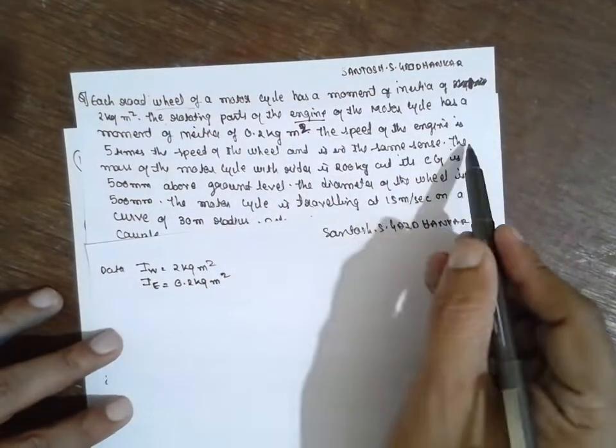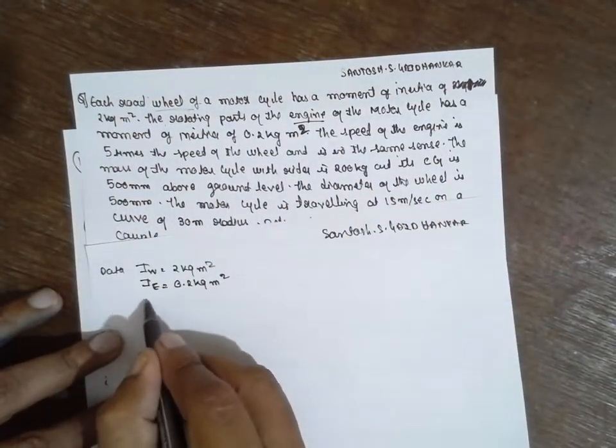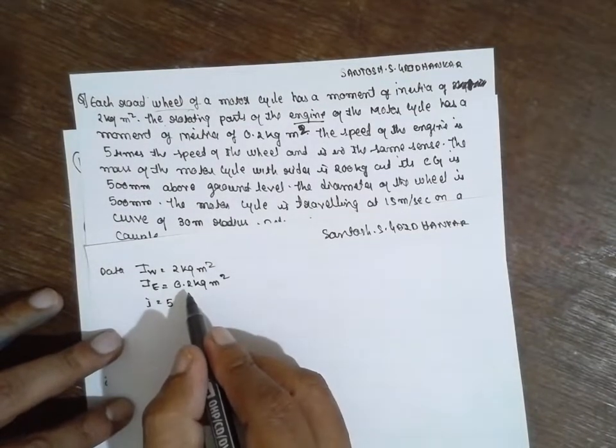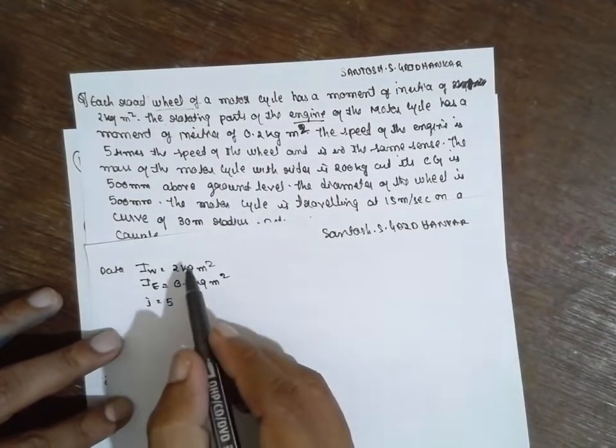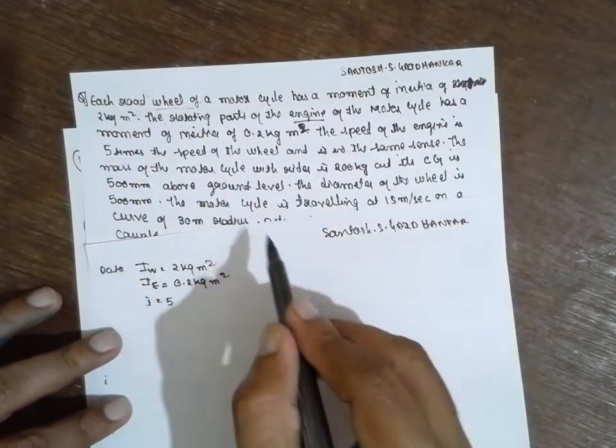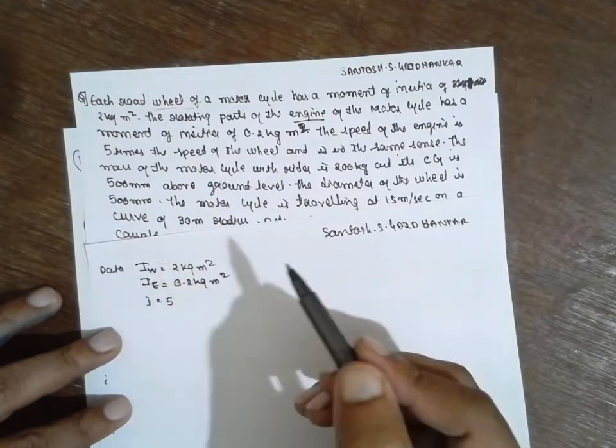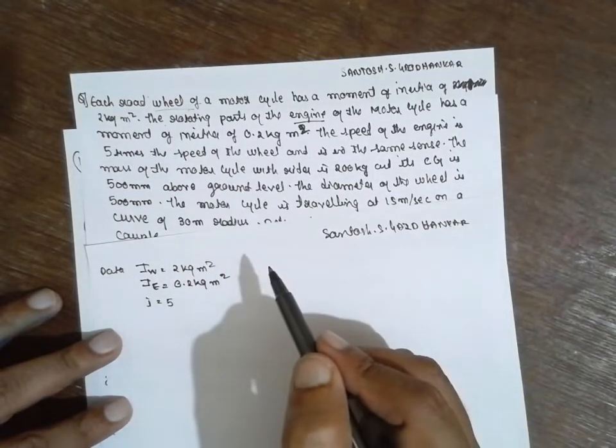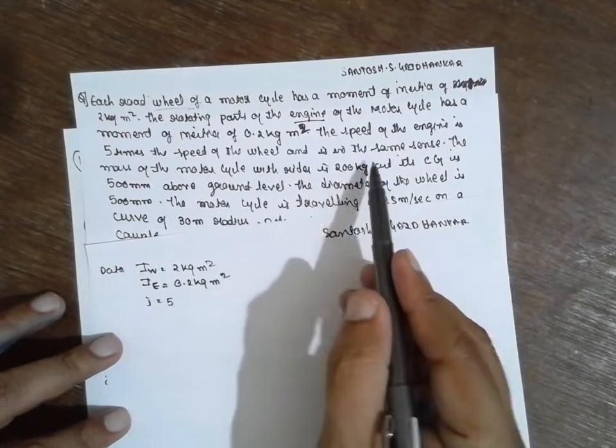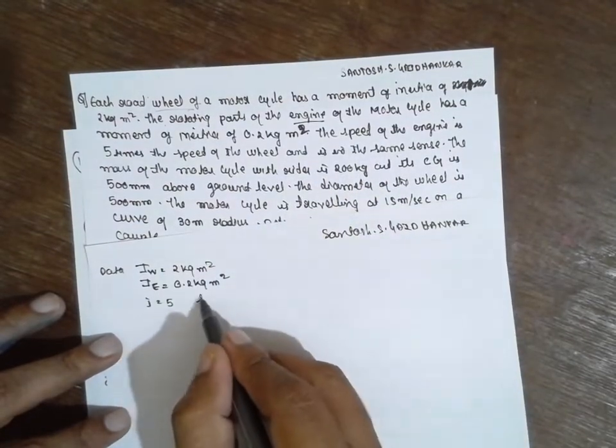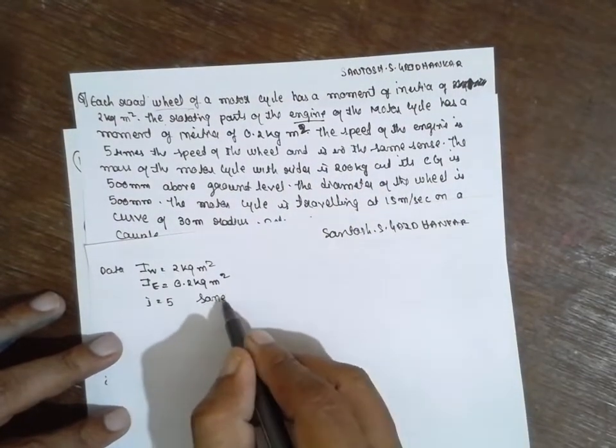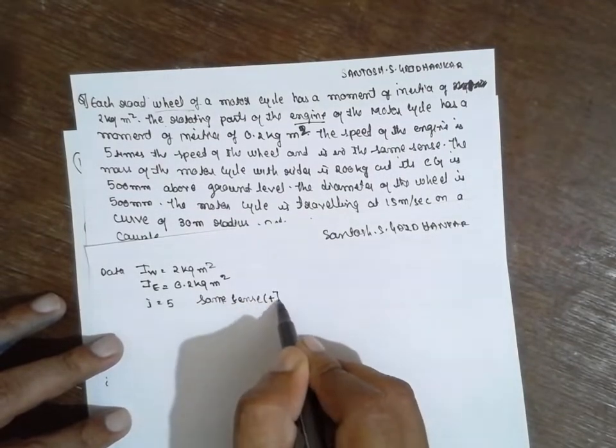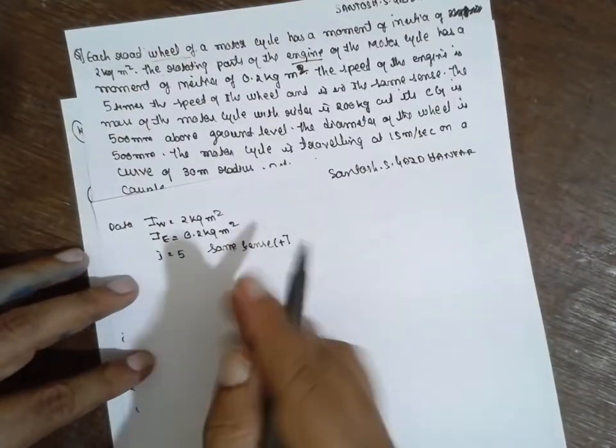The speed of the engine is five times the speed of the wheel. That is I is given five times, WE by W. Omega E divided by Omega W is nothing but I. The ratio is given directly. But in the same sense, same sense is nothing but positive. It means we have to consider it as positive. Opposite sense we have to consider it as negative.